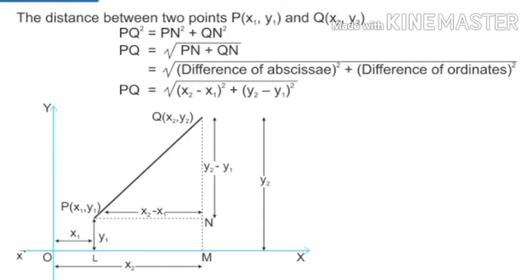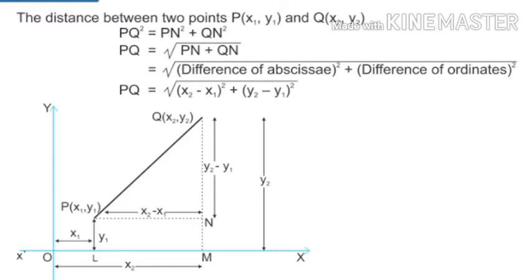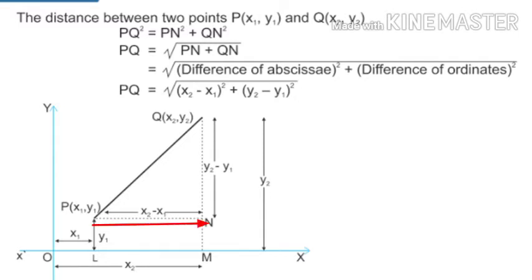We have taken two points on the graph, P and Q. The coordinate of P is (x1, y1) and the coordinate of Q is (x2, y2). We have to find the distance between these two points without using the distance formula, since we are in the process of deriving it. From point P, construct a perpendicular line to the x-axis at L, and similarly from Q to M. Also construct a perpendicular line from P to N.